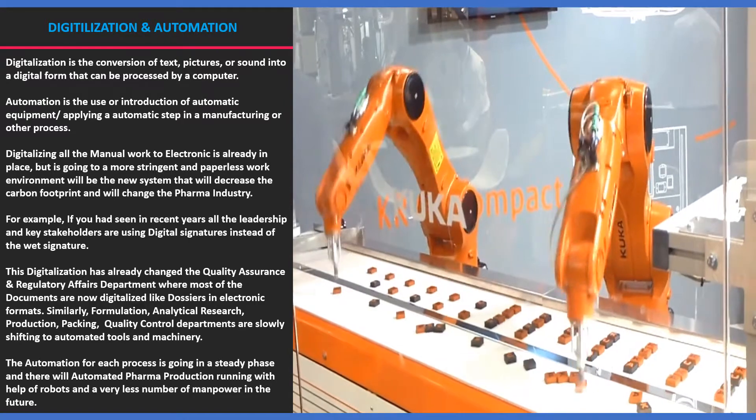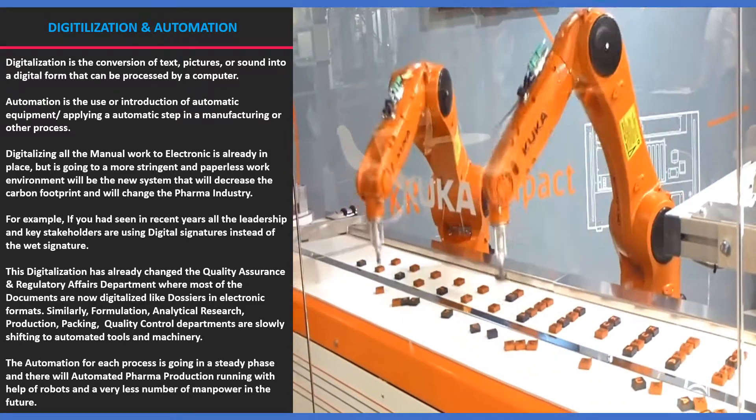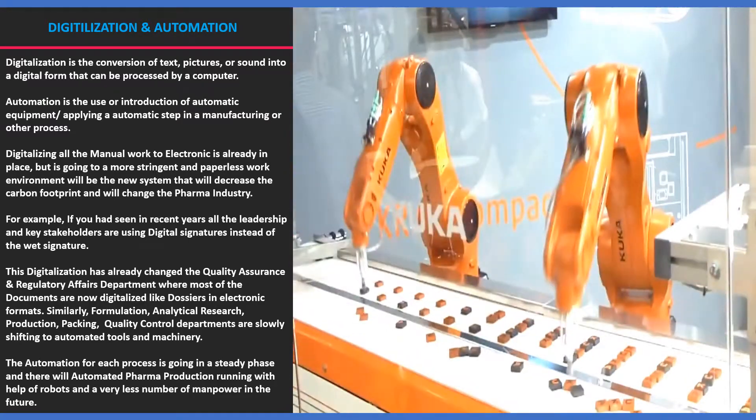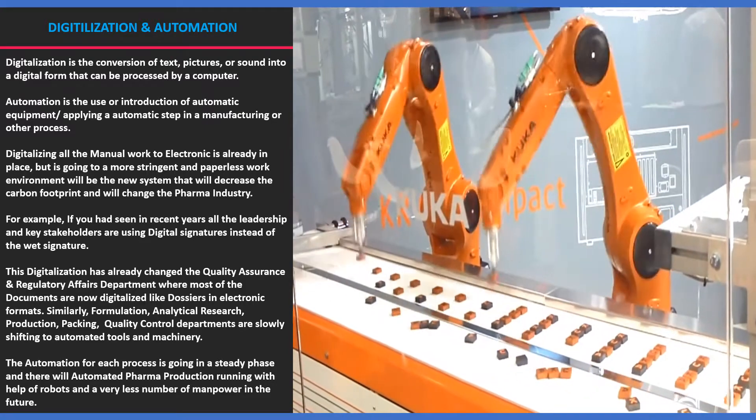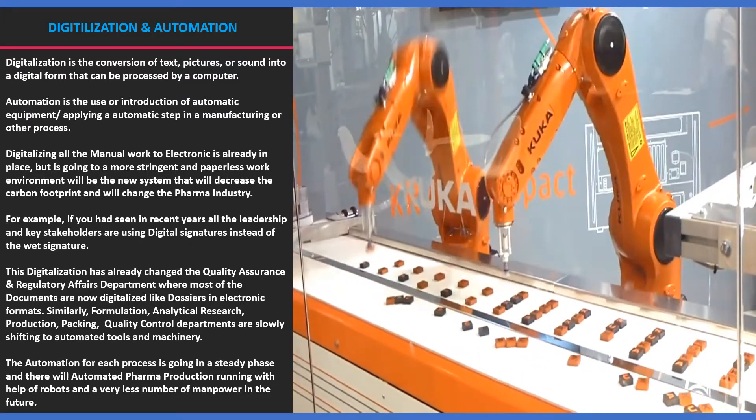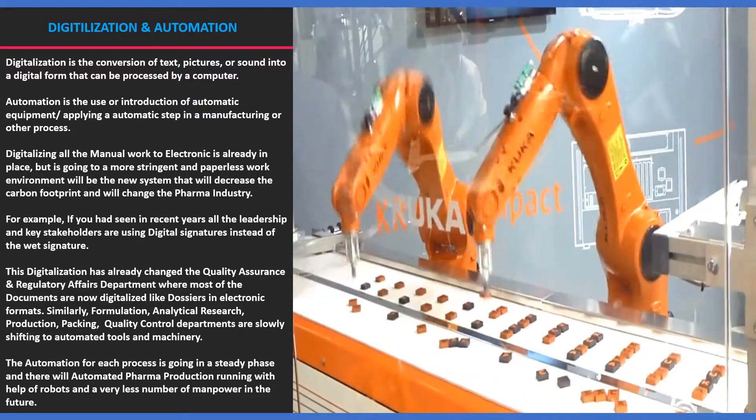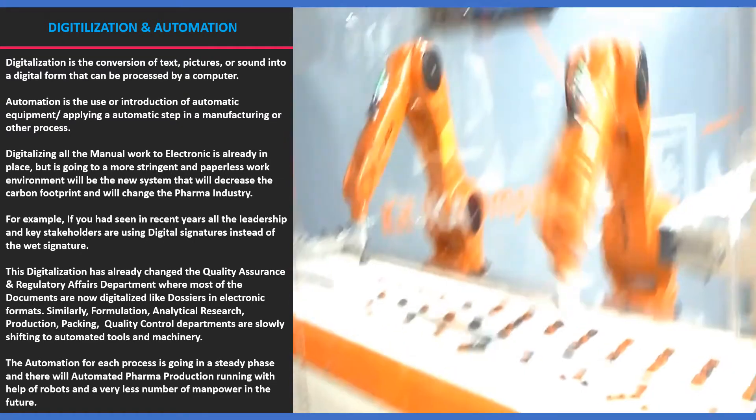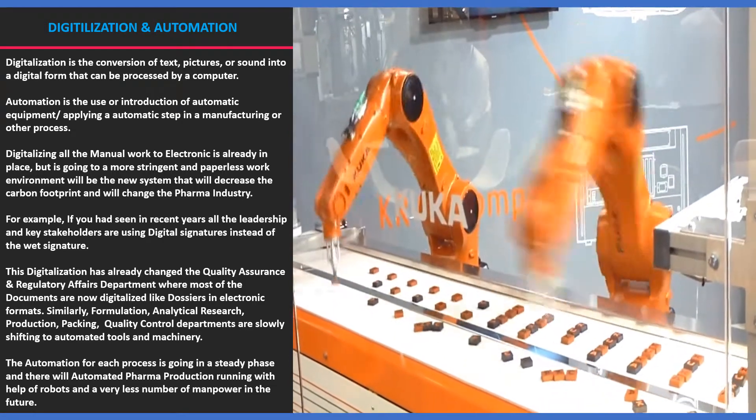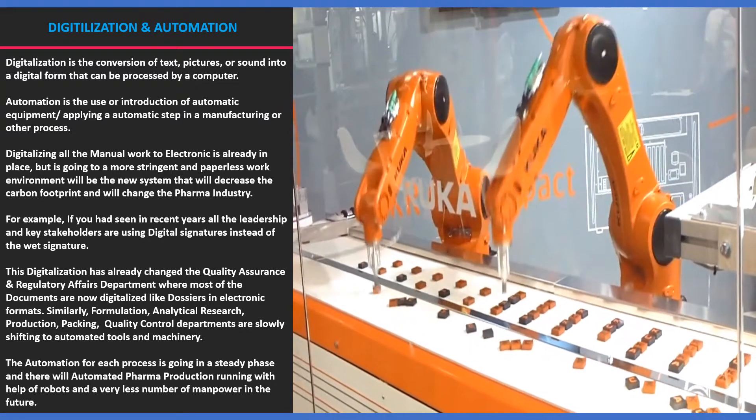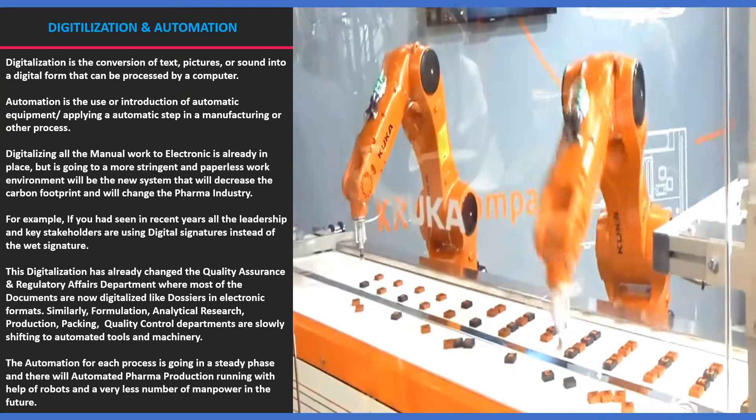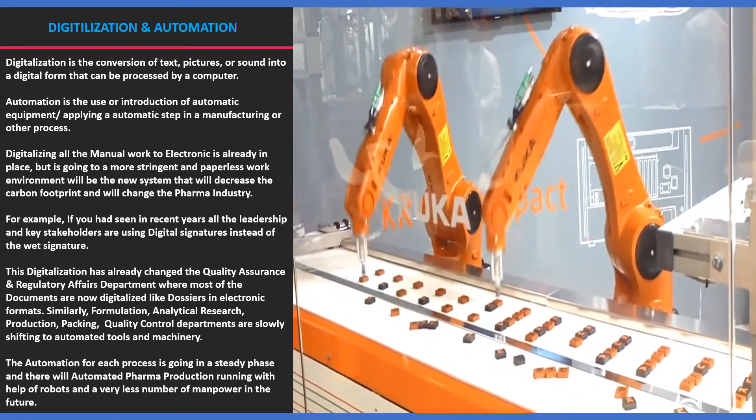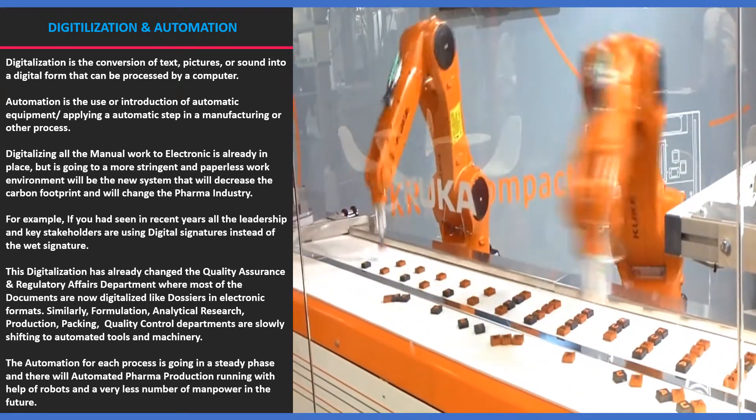Similarly, formulation, analytical research, production, packing, quality control departments are slowly shifting to automated tools and machinery. The automation for each process is going in a steady phase and there will be automated pharma production running with help of robots and a very less number of manpower in the future. For example, inside Amazon delivery hub 70% of inter-transportation is done by robots.